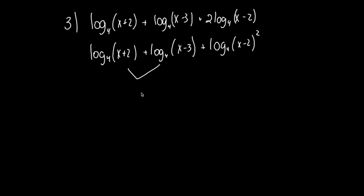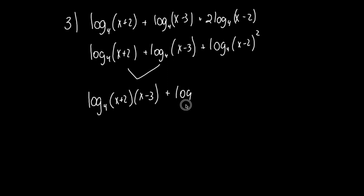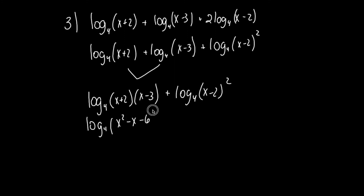I'll work two at a time, starting with the first two. I have a sum of separate logs with the same base, so I convert them into a single log of a product: log base 4 of (x + 2)(x − 3). Let me foil this out — x squared, outer is negative 3x, inner is positive 2x, so minus x minus 6 — giving log base 4 of (x² − x − 6), plus log base 4 of (x − 2) squared.